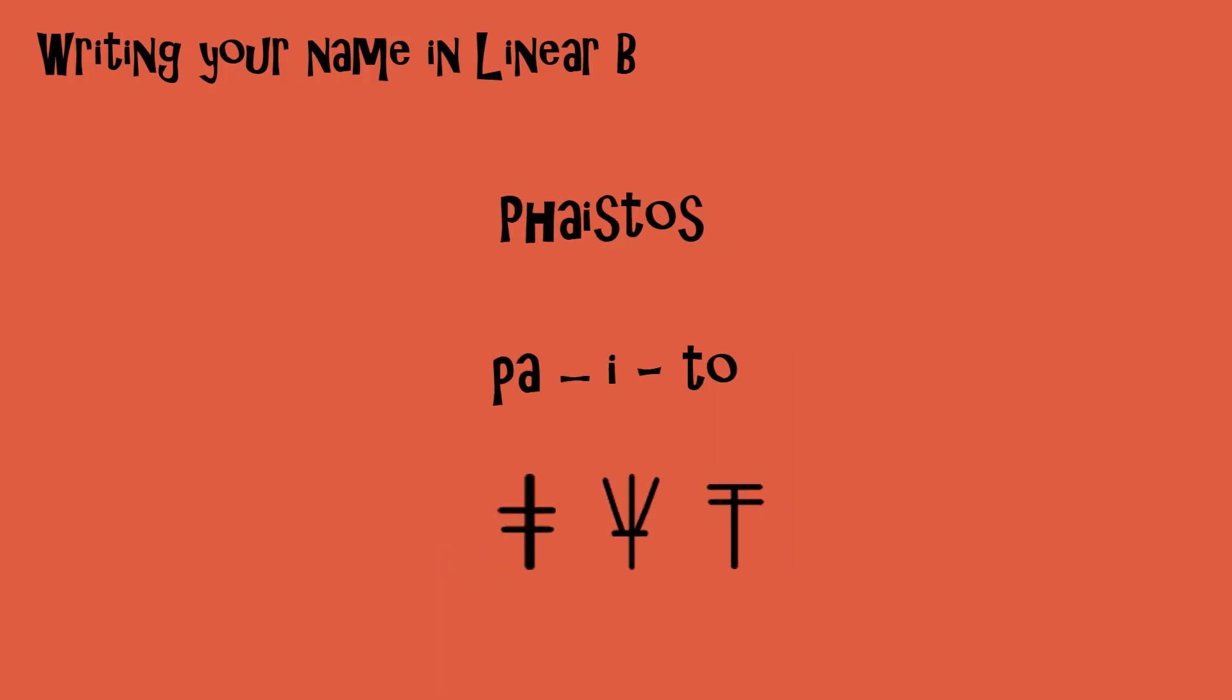And here is another name, this time a place name, which is also recorded in Linear B, Phaistos. The PH has to be written with the sign of a P, so we start with Pa. Pa, I, To. With this word, as with Glaucus, you don't write the final S.